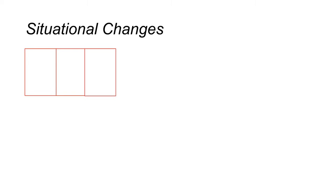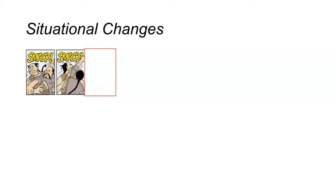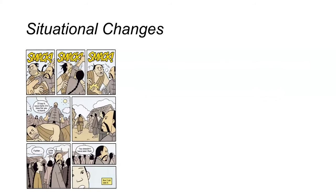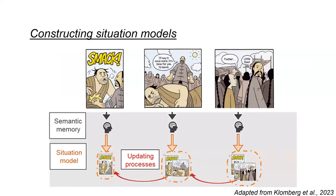In visual narratives like comics, we have comic panels. To comprehend visual narratives, the reader should track changes in representations of characters, spatial locations, and events across those panels — like I am demonstrating now, and hopefully you are tracking the changes. This flow of meaningful information feeds into a reader's situation model.